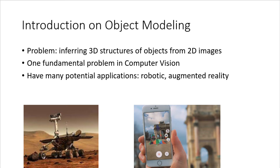It has many applications in robotics and augmented reality. In robotics, the robot agent needs to map the surrounding environment and the objects it will interact with into 3D models, because 3D models allow the robot to interact with objects — for example, the robot can grab the object, push the object, etc.